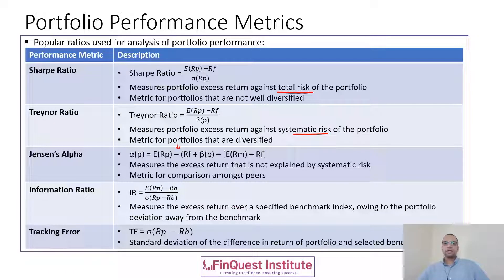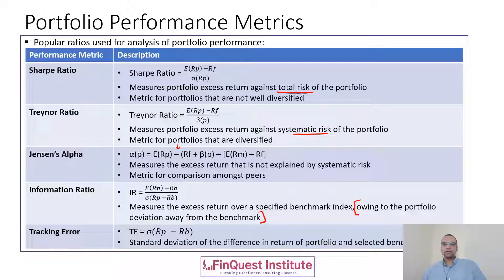The information ratio formula is (ERp - Rb) / σ(Rp - Rb). The numerator measures the excess return of the portfolio over the selected benchmark index. The denominator measures the portfolio's deviation away from the benchmark — specifically, the standard deviation of the difference in returns between our portfolio and the benchmark portfolio.